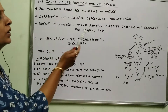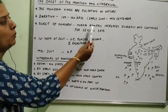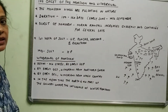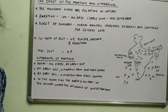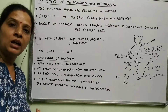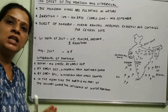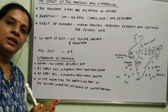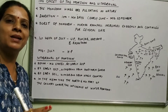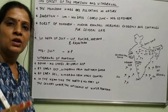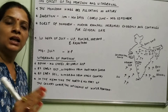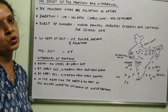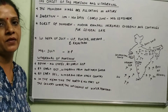Burst of the monsoon — what is that? Normal rainfall increases suddenly and continues for several days; that is called the burst of the monsoon. When rainfall occurs in the rainy season, it keeps raining for a few days, then after that there will be a break with sunny days, and then again rainfall occurs. This is called the burst of the monsoon.